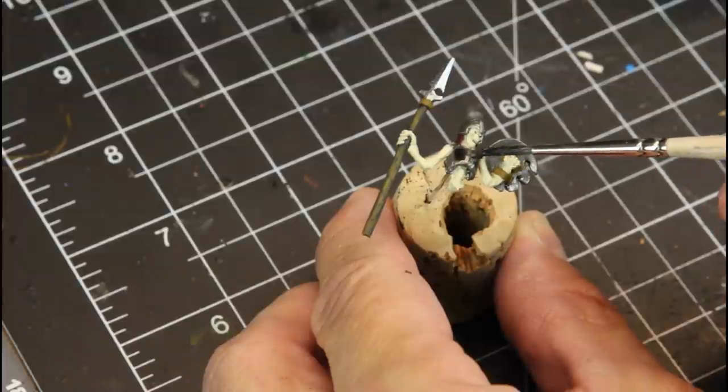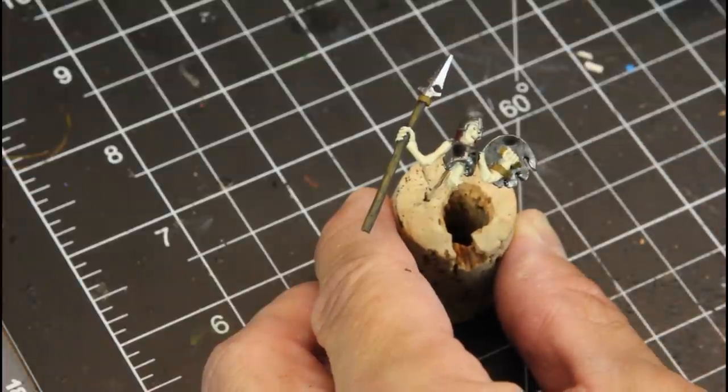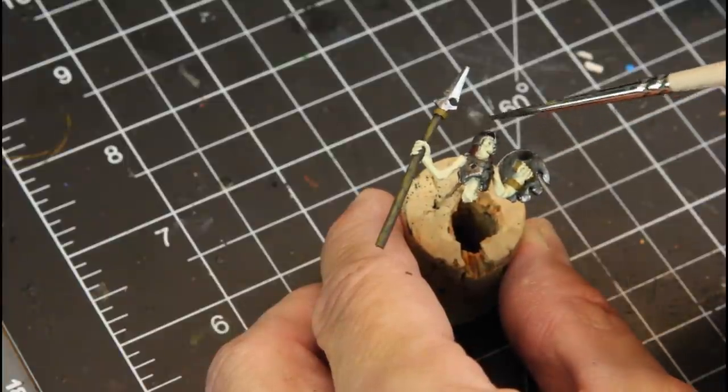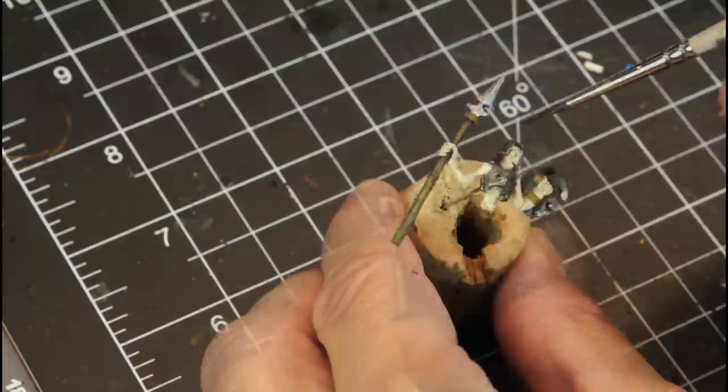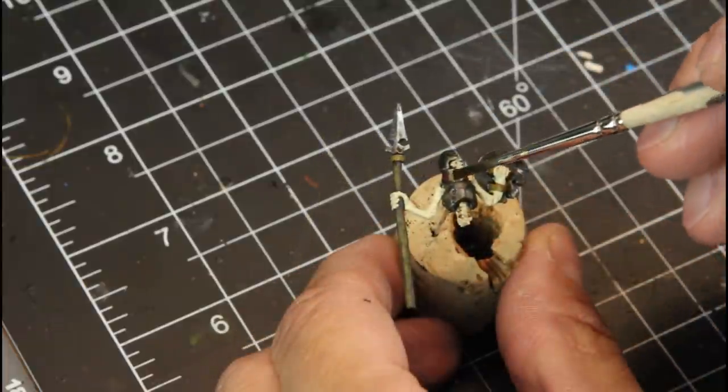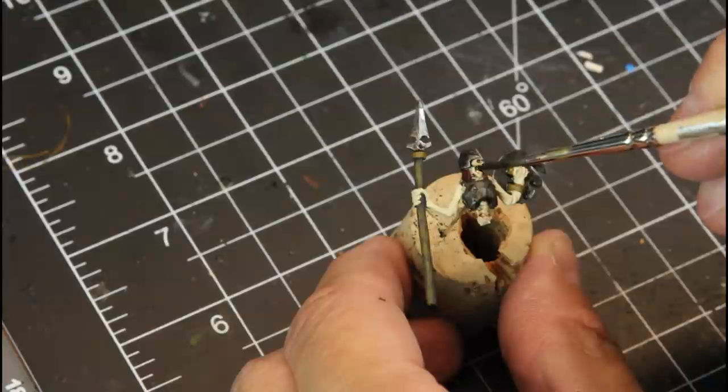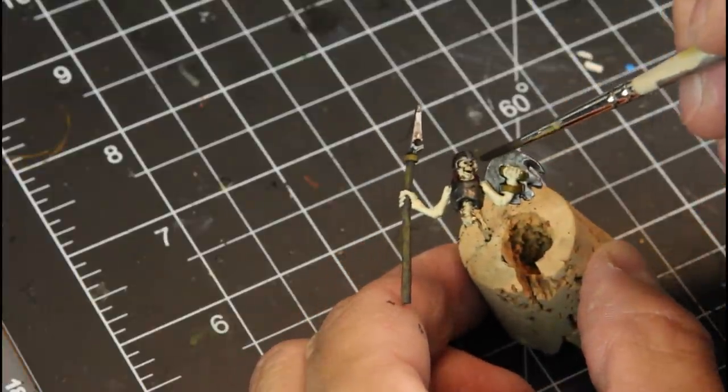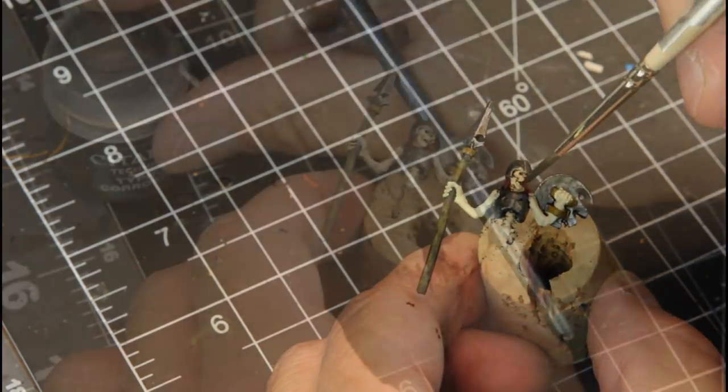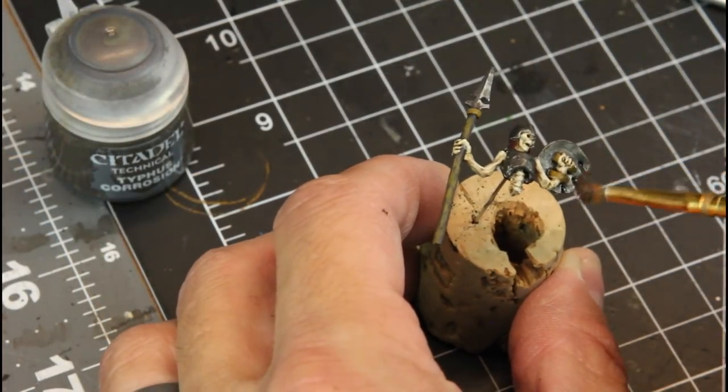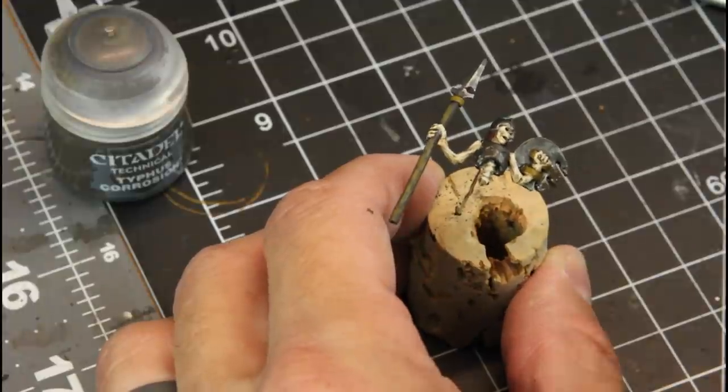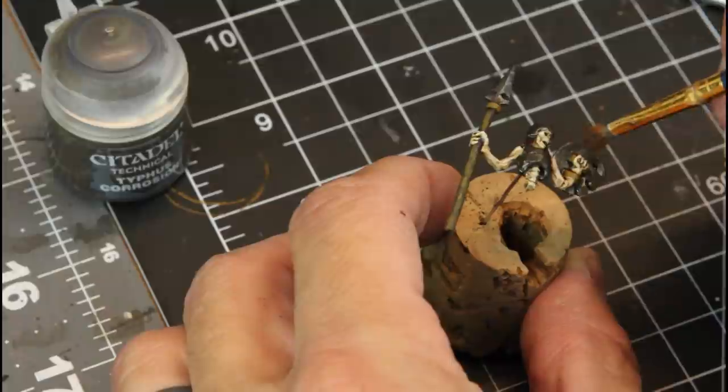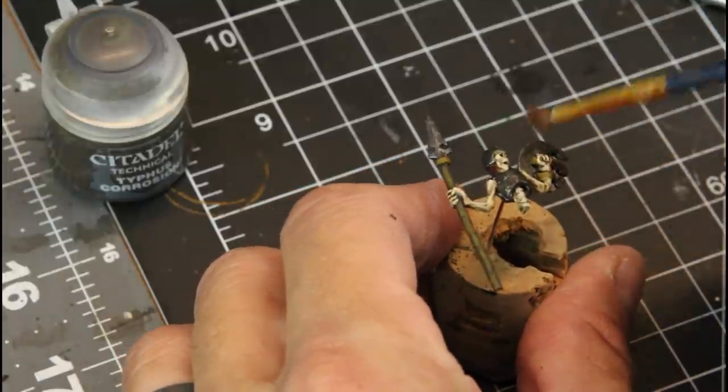And now this is a little bit of Nuln Oil. We're going to paint this over all of the metal. And then we'll take a little Agrax Earthshade to hit up all of the bone white color.